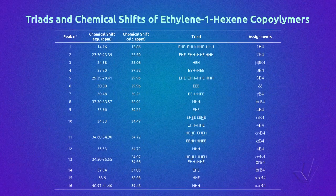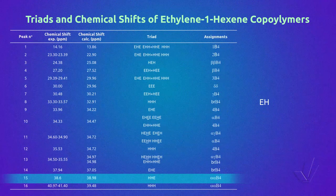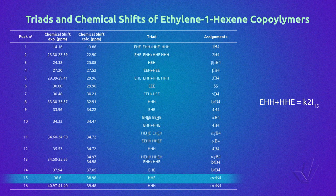Returning to the table, we can see that the triads EHH plus HHE are not isolated. Only the triad HHE is represented by peak 15, so we estimate that there can be the same amount of the triad EHH, and we can multiply the integral of peak 15 by 2. Thus, we obtain the equation: EHH plus HHE equals K multiplied by 2 times the integral of peak 15.